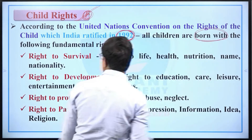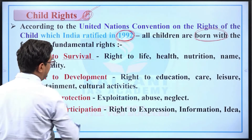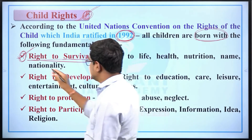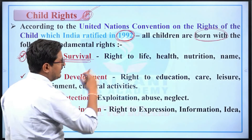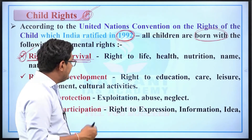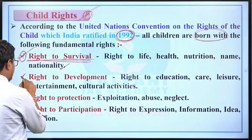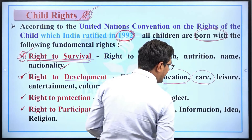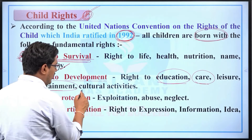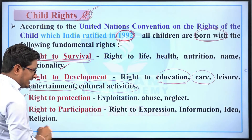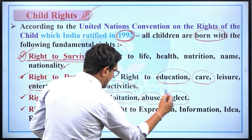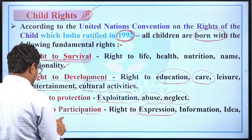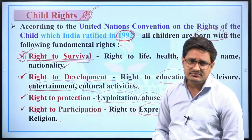Child rights according to UNCRC (ratified by India in 1992): First, Right to Survival — every child has the right to survival, meaning right to life, right to health, nutrition, name, and nationality. Second, Right to Development — right to education, right to care, right to leisure, right to entertainment, and cultural activities. Third, Right to Protection — protection from exploitation, abuse, and negligence. Fourth, Right to Participation — right to expression, right to information, idea, and reason. These are the four child rights.